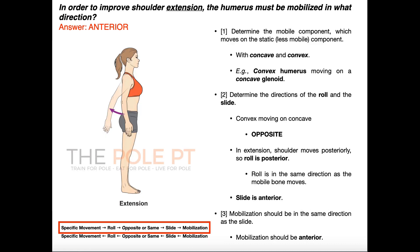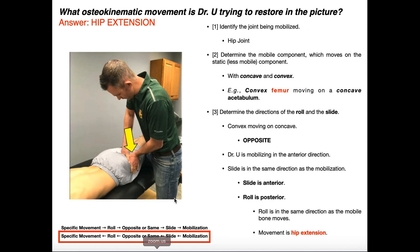In the previous two videos, we covered three examples where we're given some kind of osteokinematic movement — the specific movement — and then we have to predict what direction, and also what bone, we have to mobilize in order to improve that particular movement. So we're going from the specific movement that's given to predicting the mobilization direction. Now we're going to go the reverse direction: we're going to be given, either told or shown a picture of the particular mobilization direction, and then determine what specific movement the therapist is trying to restore.